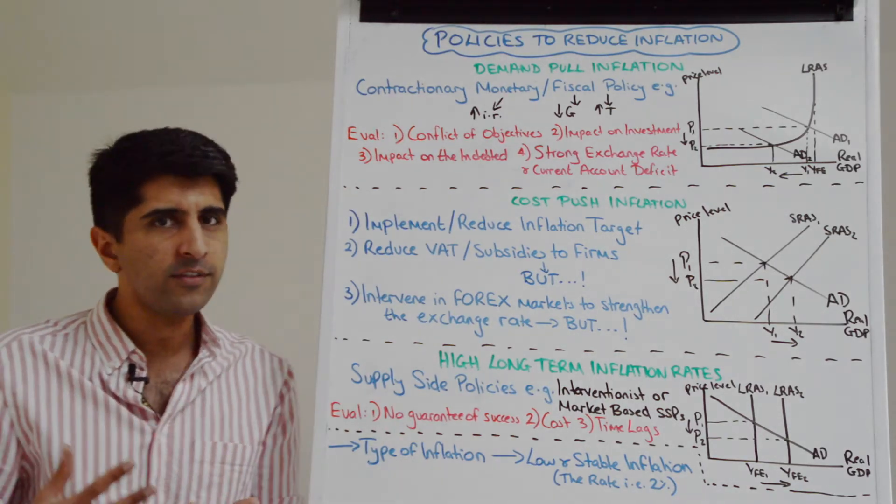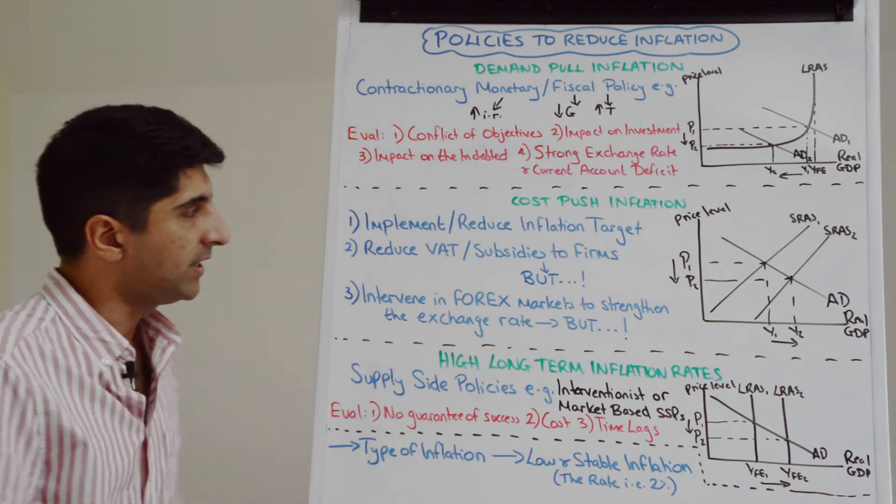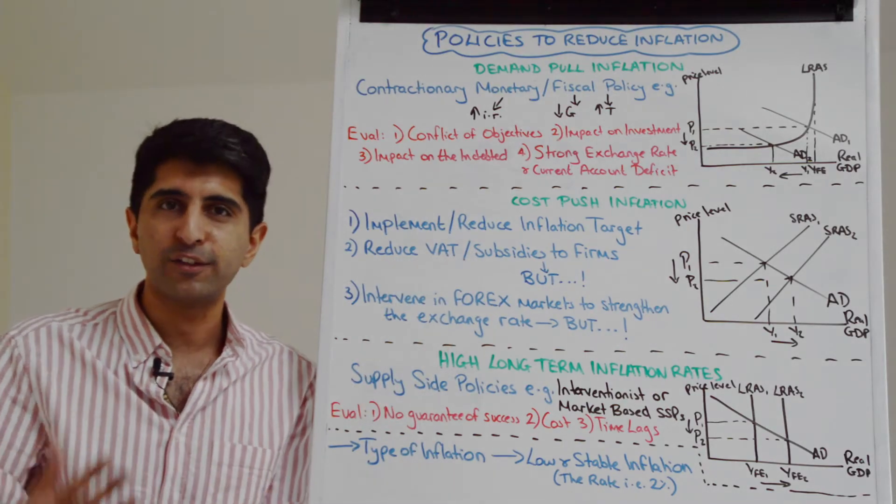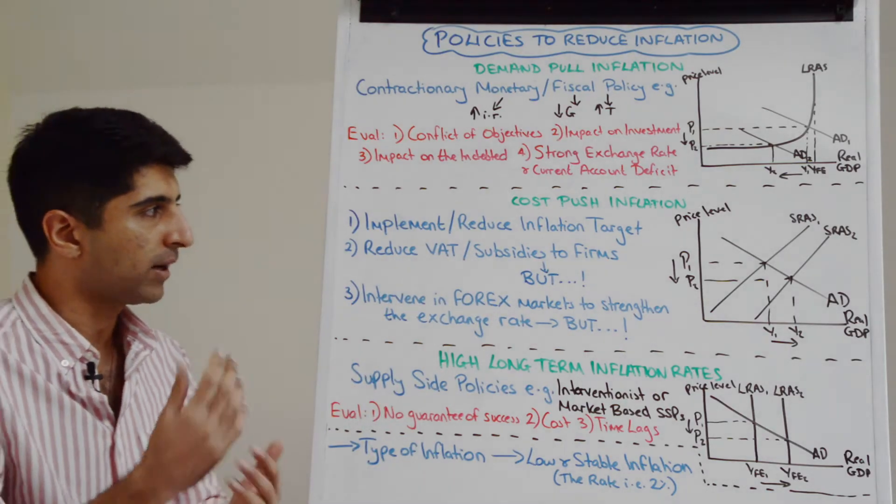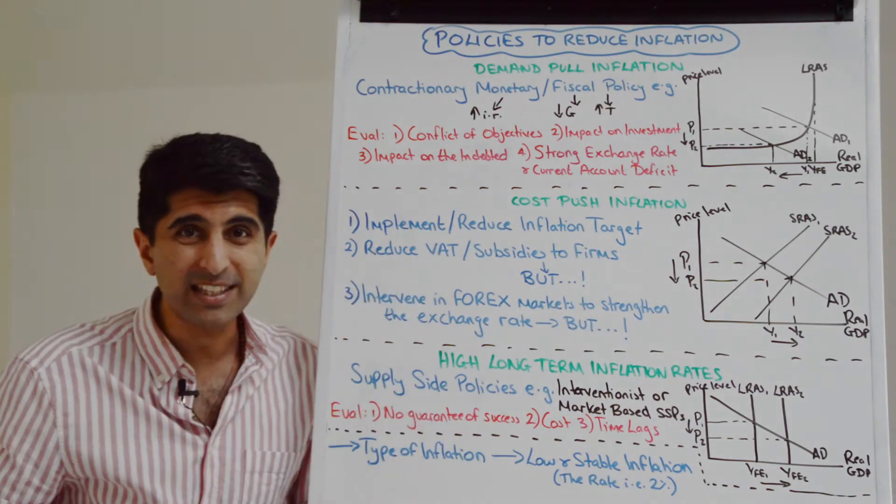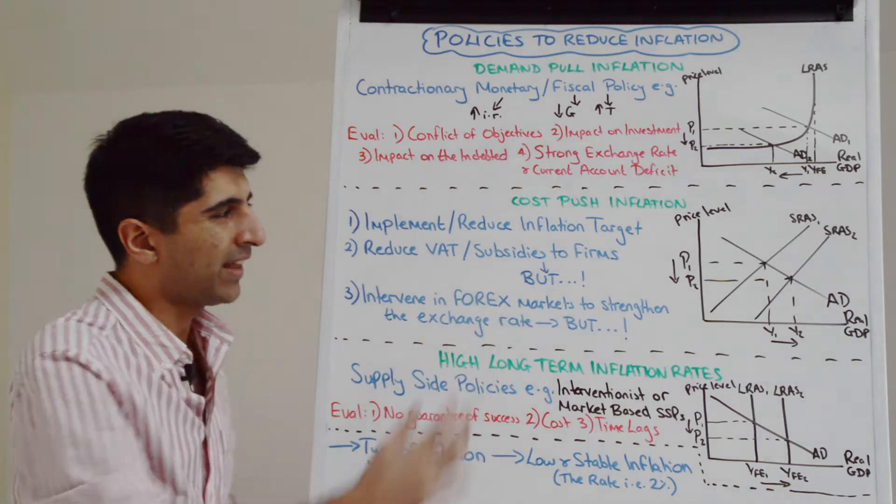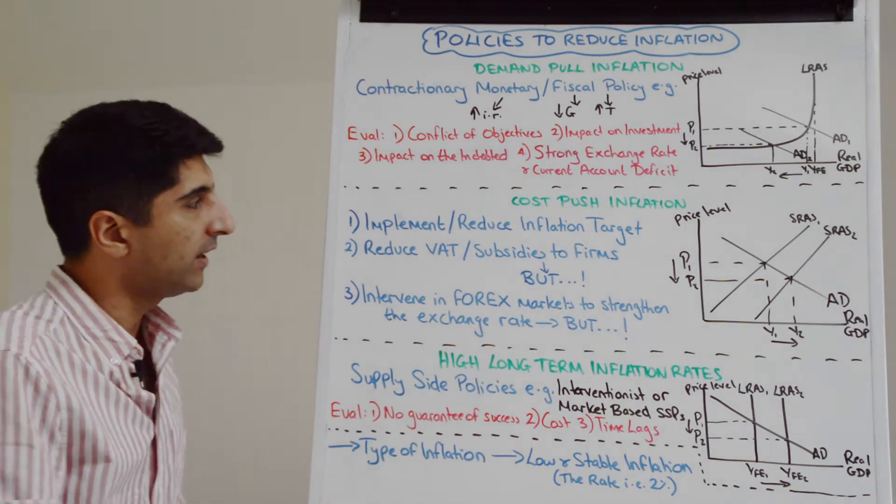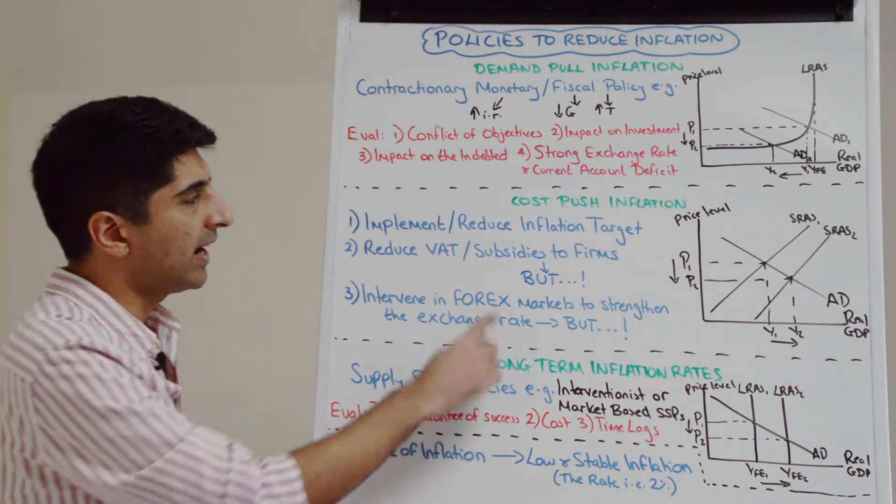What if it's high rates of VAT? Well, simply could cut VAT. Or we could go the other way and subsidize firms to reduce their cost of production and bring inflation down. But if we talk about subsidies, even if we talk about VAT, there is one obvious issue here and that is a significant cost to the government and the worsening of government finances.